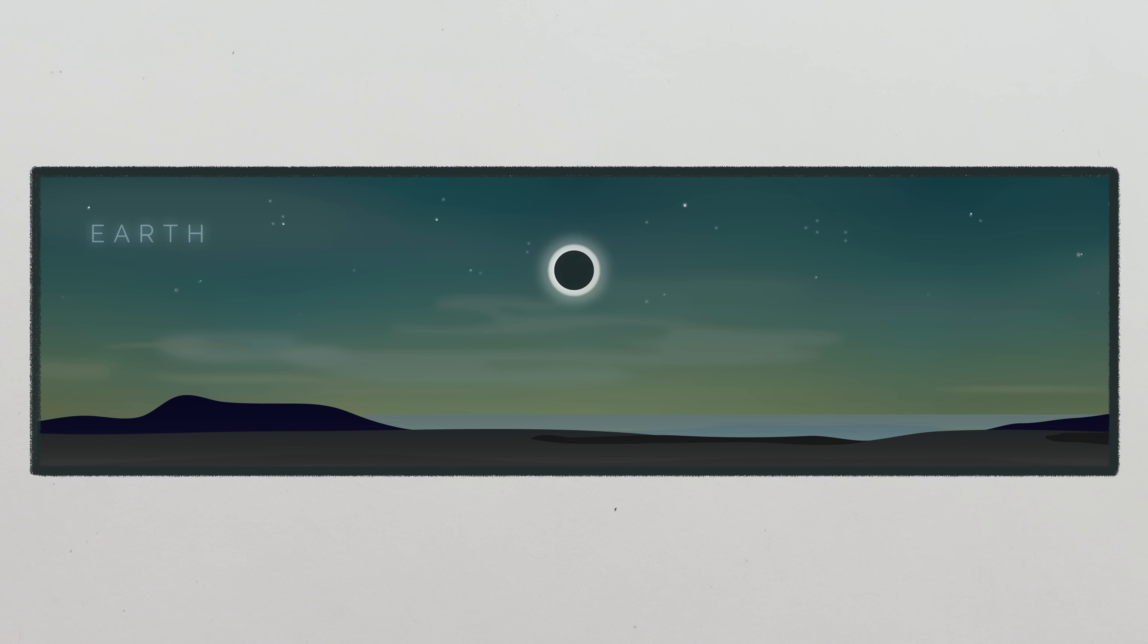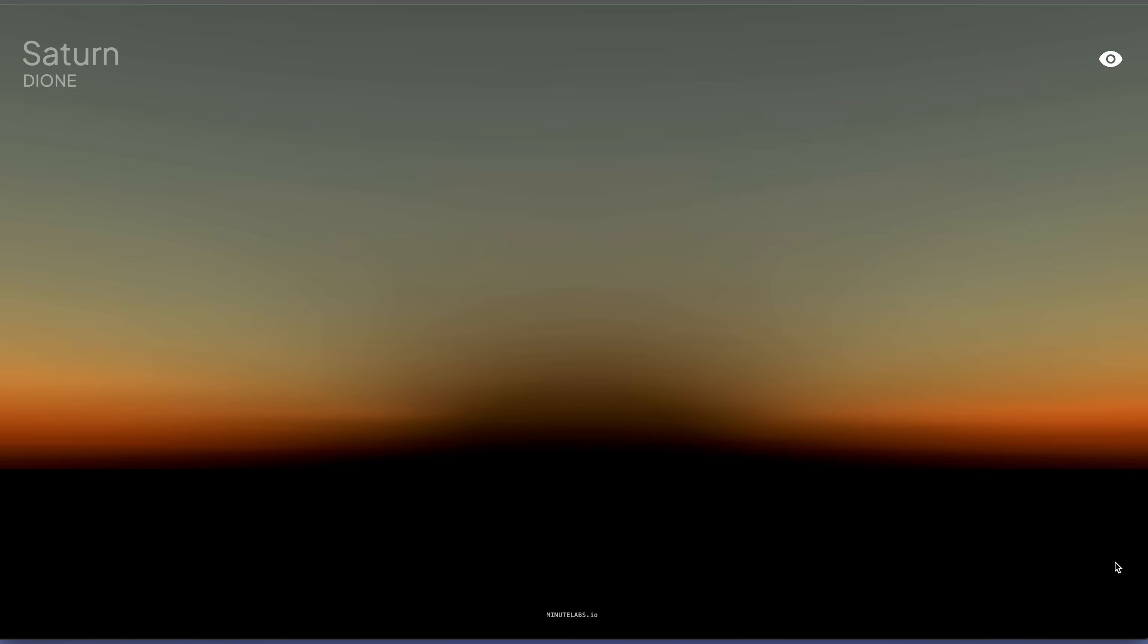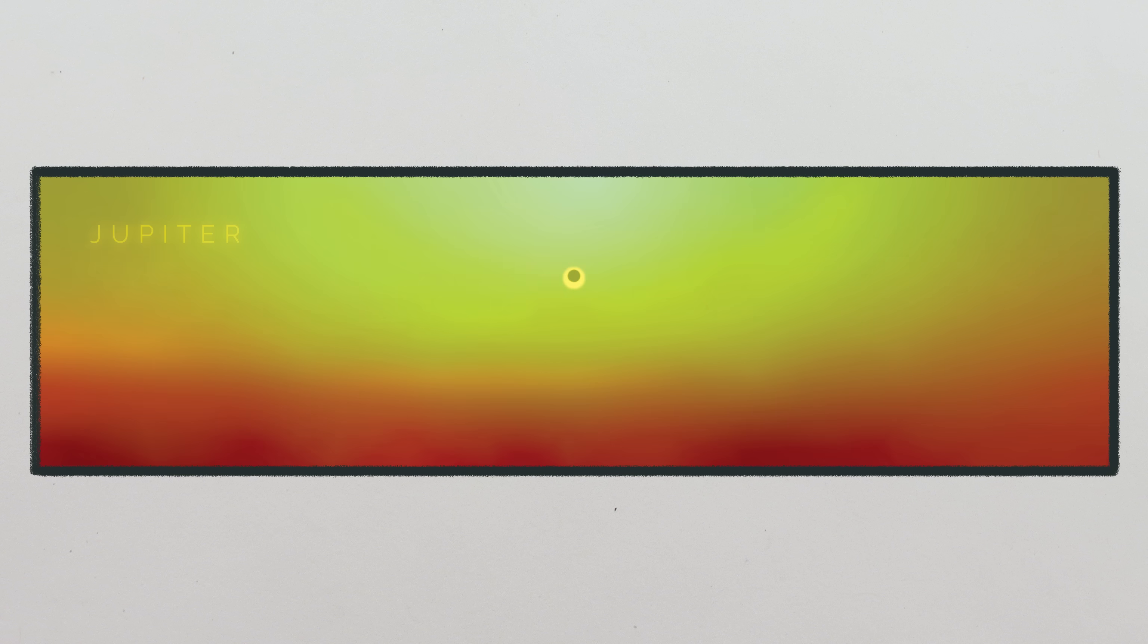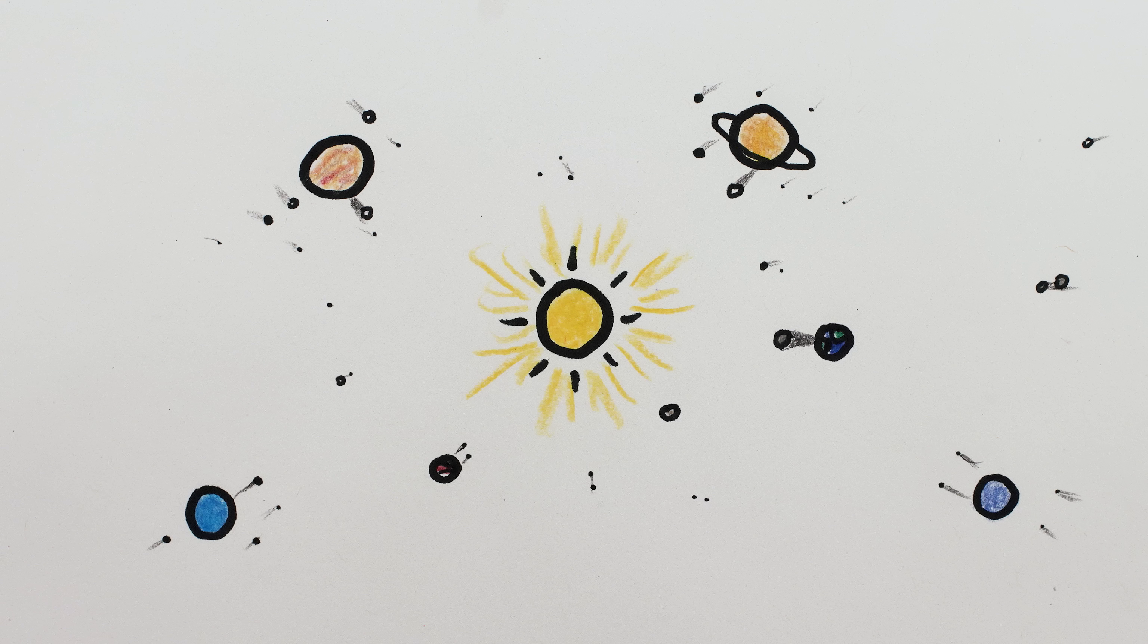Solar eclipses don't just happen here on Earth. Moons of other planets also pass between those planets and the Sun, resulting in various types of solar eclipses on Mars, Jupiter, Saturn, Uranus, Neptune, and even non-planets like Pluto, Eris, and various asteroids. So where are the best eclipses in the solar system?